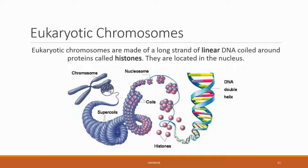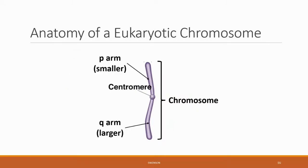These then form coils, which then form coils on themselves. This is kind of like a cord that gets twisted, and then if you over-twist it, it folds back on itself to form twists on top of twists — similar to a phone line cord when it gets twisted too much and forms another coil on top of itself. This leads to a highly condensed form of DNA that gives the shape of the chromosome.